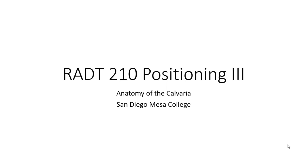In this presentation, we will be covering the anatomy of the calvaria, including the frontal bone, ethmoid bone, and parietal bones.